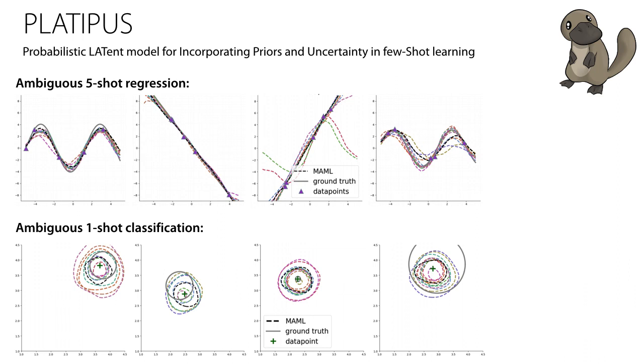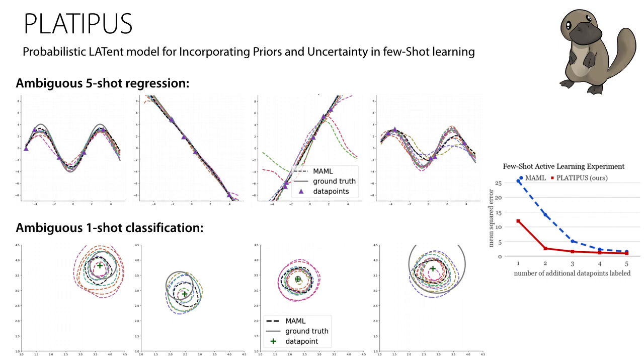We first experiment with illustrative regression and classification problems, which show that our method is able to sample qualitatively meaningful hypotheses. We also find that the uncertainty represented by our model can be used for effective active learning, reducing the amount of labels needed for good performance.